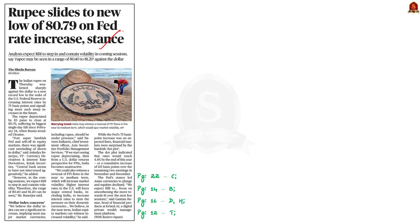Now let us take up the final article for our discussion. This article speaks about the depreciation of the Indian rupee against the US dollar. Yesterday, the Indian rupee weakened sharply against the US dollar — it depreciated by 83 paise and stood at 80 rupees 79 paise per US dollar. The reason for the depreciation is the increase in interest rate by the US Federal Reserve, which is the central bank of the USA.